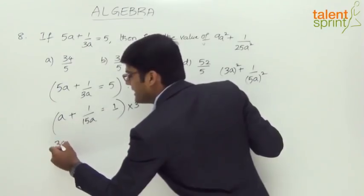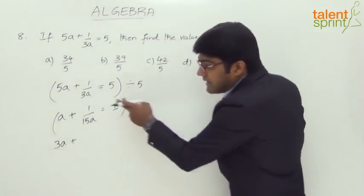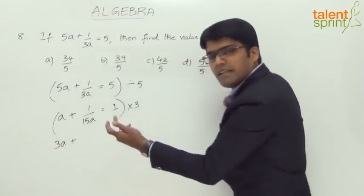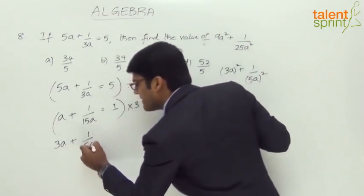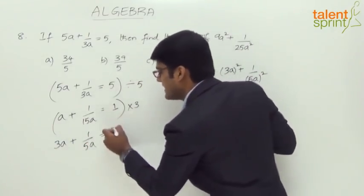So what do we get? a into 3, 3a plus 3 by 15a. 1 into 3 is 3. 3 by 15a is 1 by 5a. 1 by 5a equals to 1 into 3 is 3.